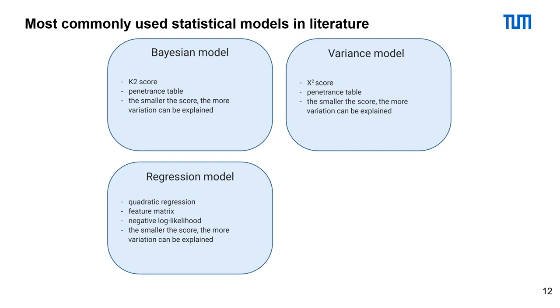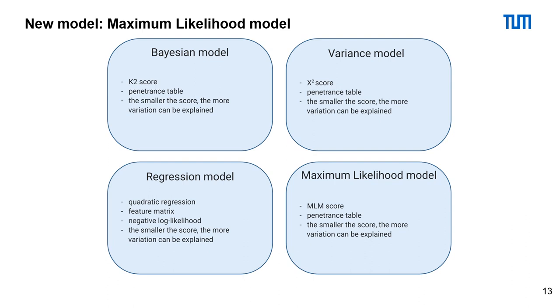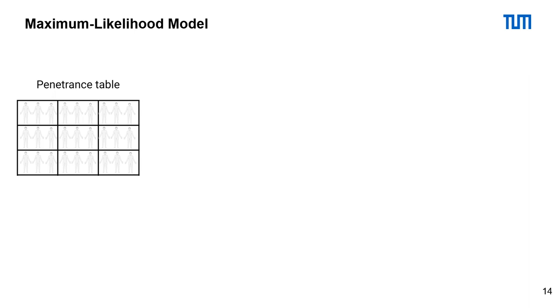On this slide, we listed the most commonly used statistical models in literature: the Bayesian, the variance and the regression model. We now want to include a new statistical model. We call it the maximum likelihood model.